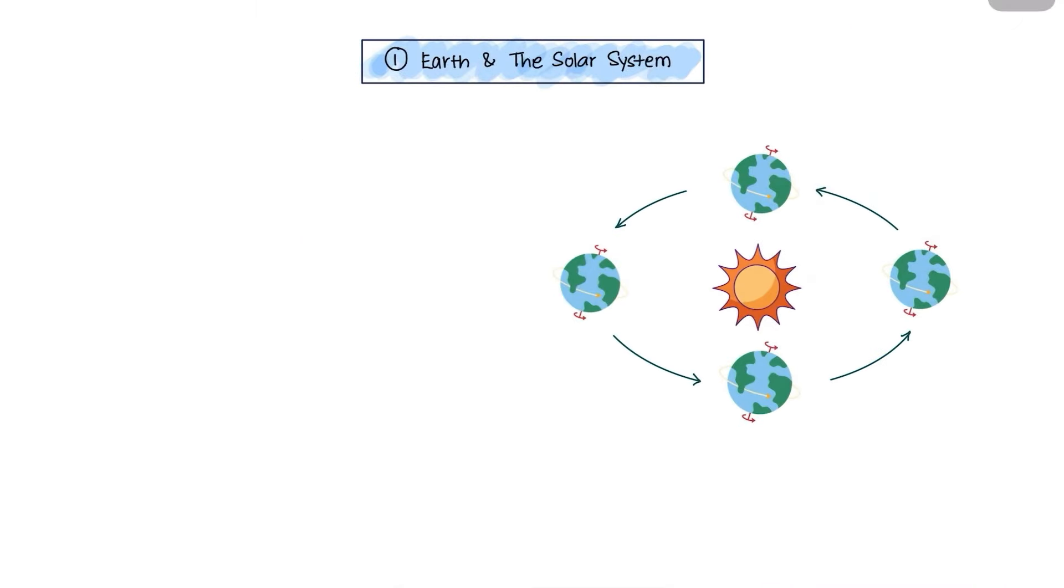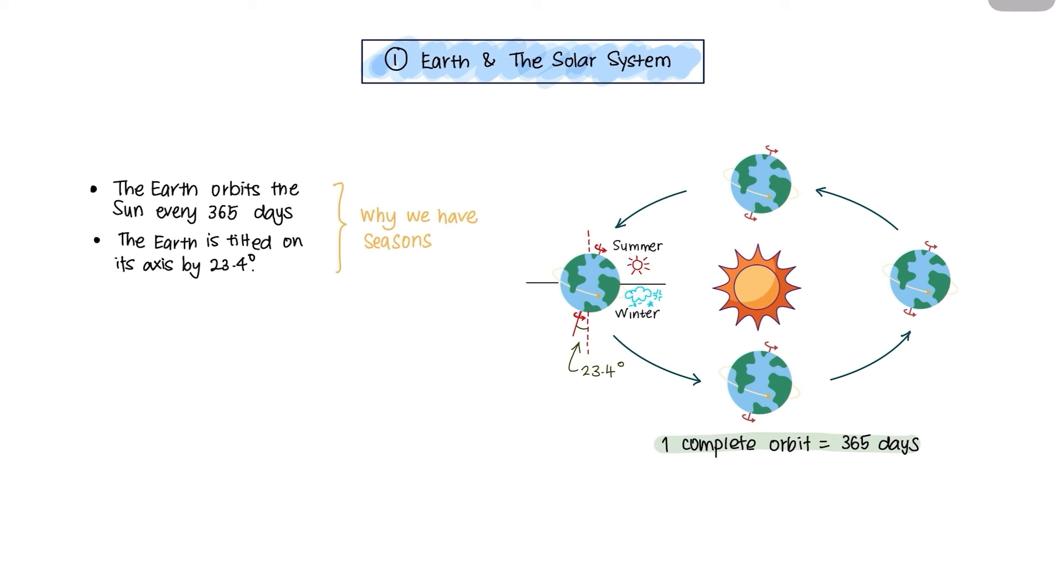So let's dive in and learn about them. The Earth is a planet that orbits around the Sun once every 365 days. The Earth is tilted on its axis at approximately 23.4 degrees. These two reasons explain why we have four seasons.